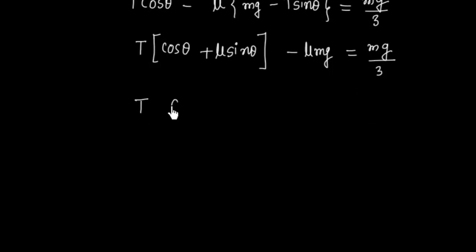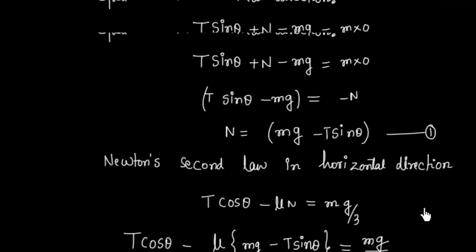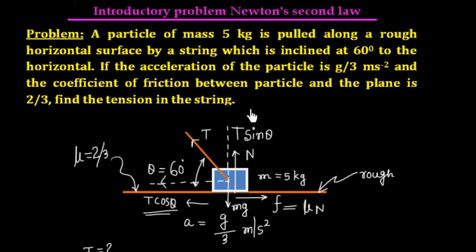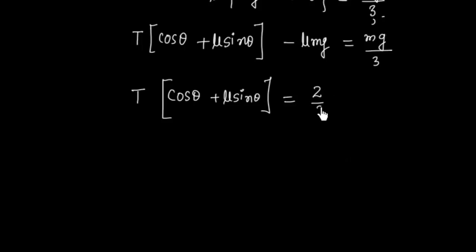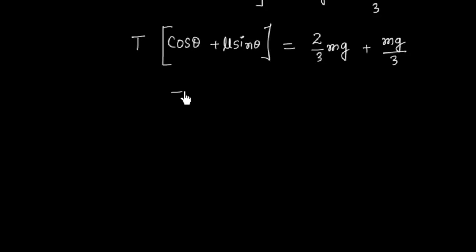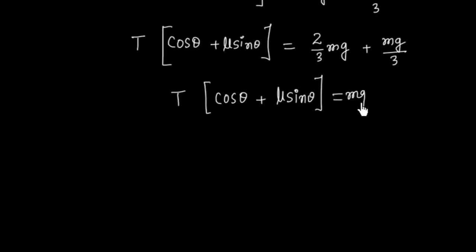With mu = 2/3, the right-hand side becomes (2/3)·mg + mg/3 = mg. So we get T(cos theta + mu·sin theta) = mg, and therefore T = mg / (cos theta + mu·sin theta).